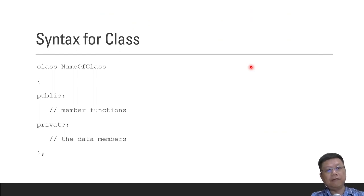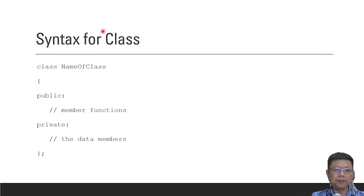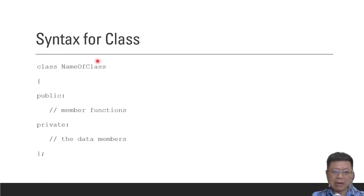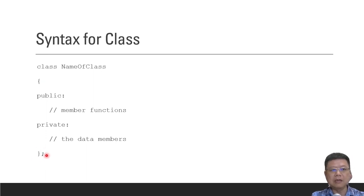In order to go further, we have to first understand class syntax. Class syntax is quite simple — just type the keyword class, then the name of the class, followed by curly brackets open and close, and a semicolon. Don't forget the semicolon. Inside the class, we will have two sections: public and private.